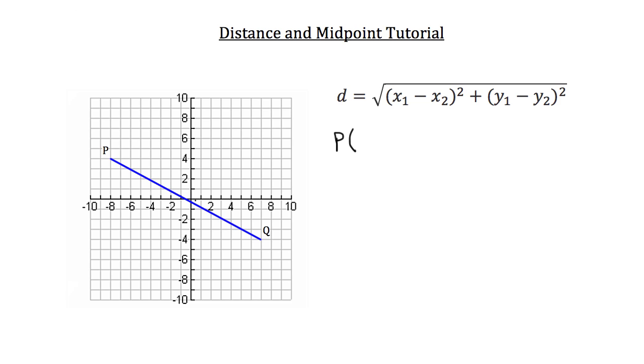P occurs at point negative 8, positive 4, and I simply counted the units to the left from the origin and the units up to arrive at point P. That was our x and y coordinates. Point Q occurs at positive 7 and negative 4.